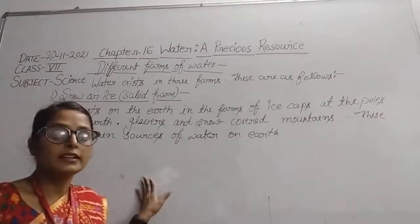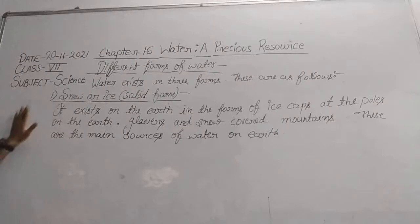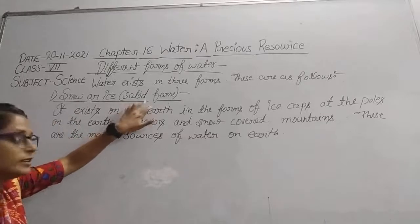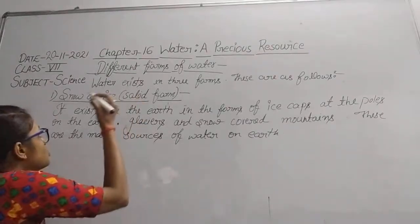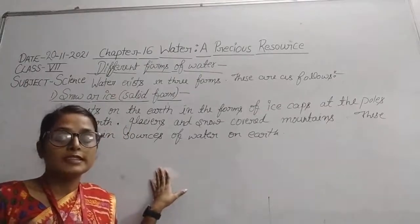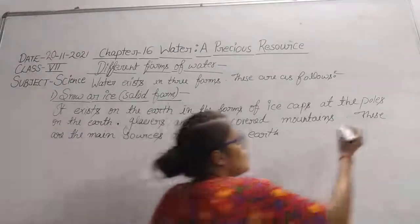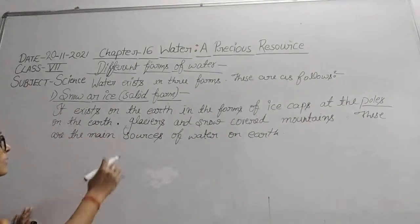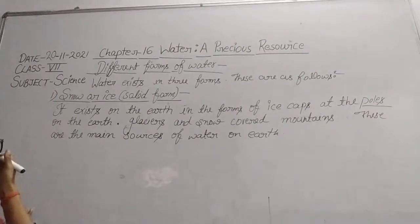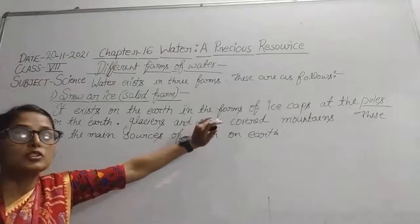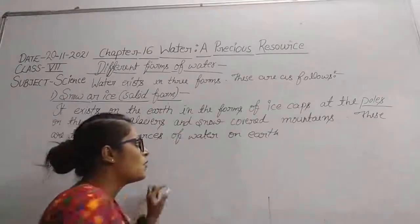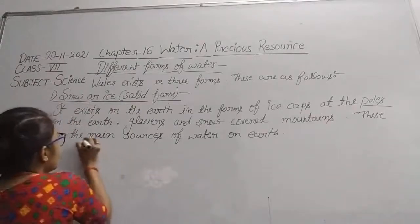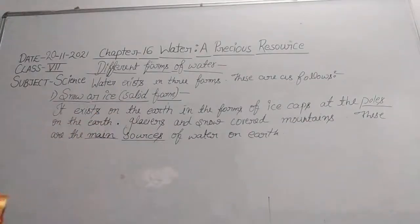These are the main sources of water that exist on the earth in solid form. Ice caps, glaciers, and snow-covered mountains are the main sources of solid water on earth.